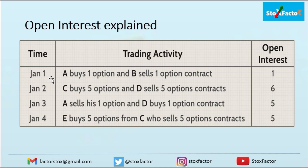Suppose on January 1, player A buys one option and B sells one option contract — there is one trade between A and B. The total open interest is now one, because one contract has been opened between two parties. On January 2, C buys five options and D sells five contracts, adding five new contracts. Combined with the previous one, the total becomes six on January 2.